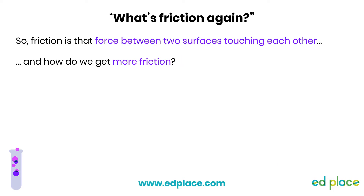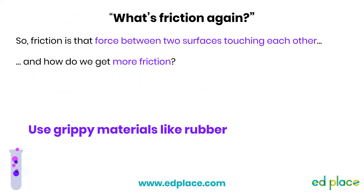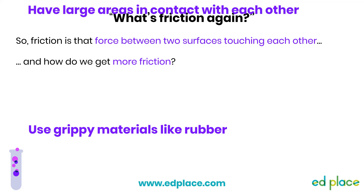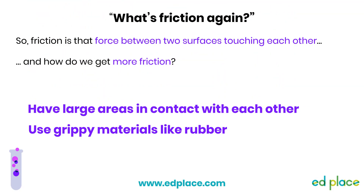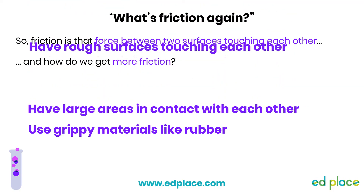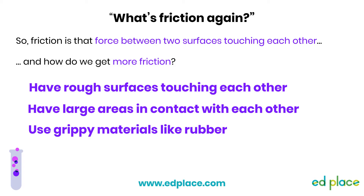So let's have a quick recap. Friction is a force between two surfaces that are touching each other. If we need more friction, then we use gripping materials like rubber. We make sure the surfaces in contact with each other are pretty large. We also make sure that those surfaces are rough and knobbly, like mountain bike tyres on a forest track.